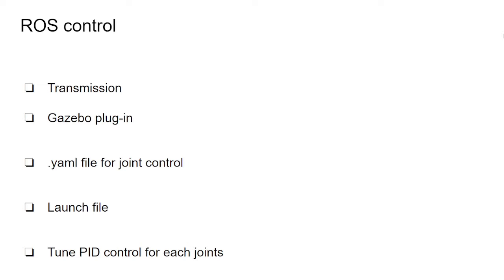Here is the list of what we need to do to create a ROS controller for any kind of robot we want to model. First, you need to create a transmission for each joint. Then you need a Gazebo plugin that helps your ROS package interact with Gazebo, making them talk to each other. Then you create a YAML file for every joint in order to control it — think of it as a configuration file that describes which kind of controller you want on each joint.